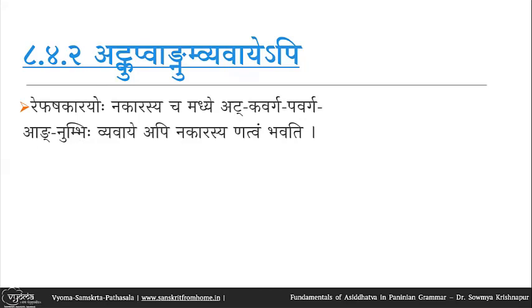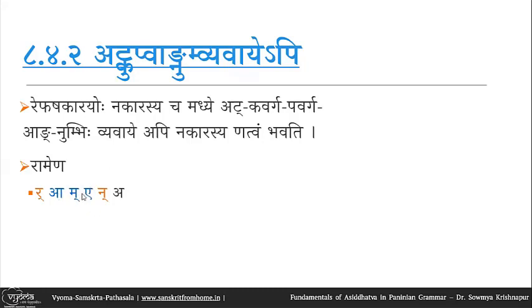For example, ramena — we have repha then nakara; in between are three letters: akara, makara, makara, and akara. Both a-karas belong to 'at' and makara belongs to the pavarga, so since all intervening letters are in the allowed category, there is natva and we have ramena.